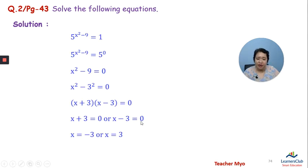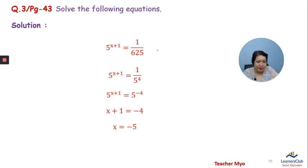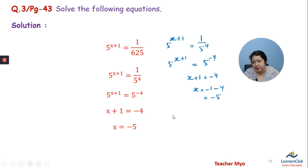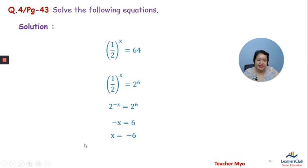Factoring: x plus 3 equals 0 or x minus 3 equals 0, giving x equals minus 3. Also x plus 1 minus 4, so x equals minus 1 divided by 4. Therefore x equals 0 as well — these are the solutions.